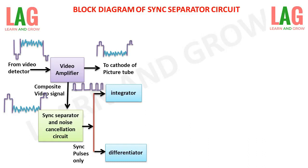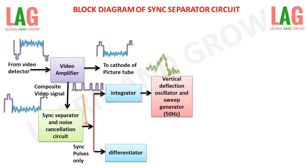The integrator will integrate the applied square pulses to produce a high-frequency triangular wave. The integrator circuit takes a square wave pulse as input and converts it into high-frequency triangular pulses. So the applied square pulses are converted into triangular pulses of high frequency.